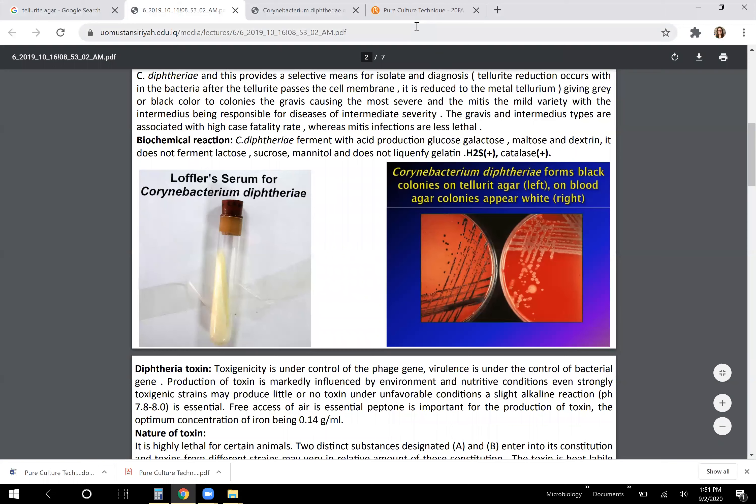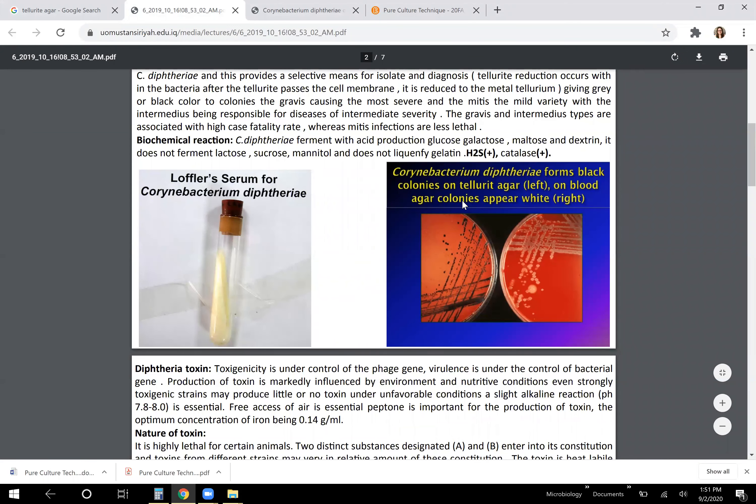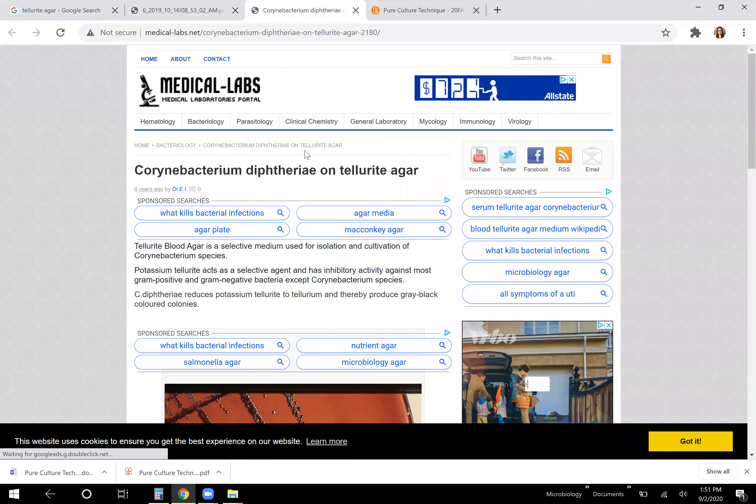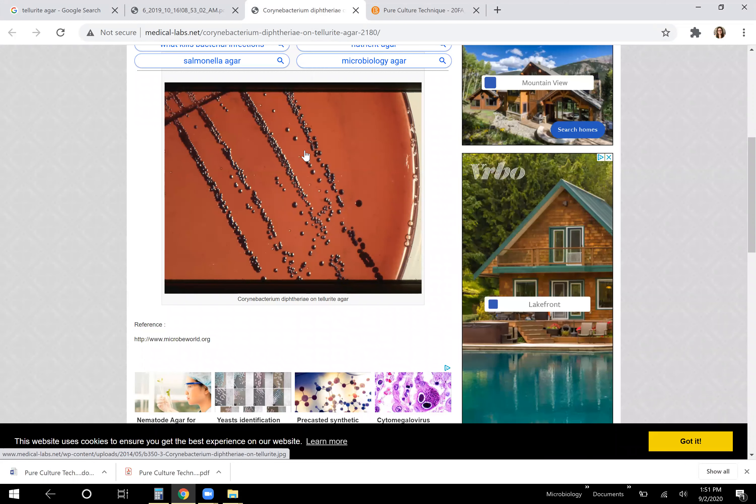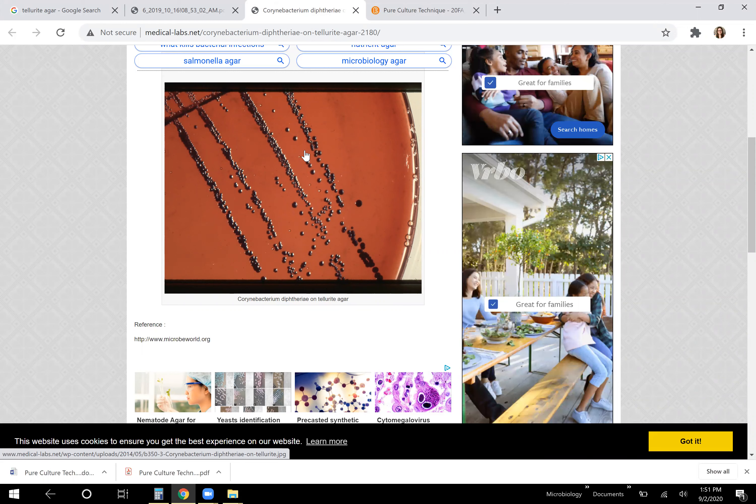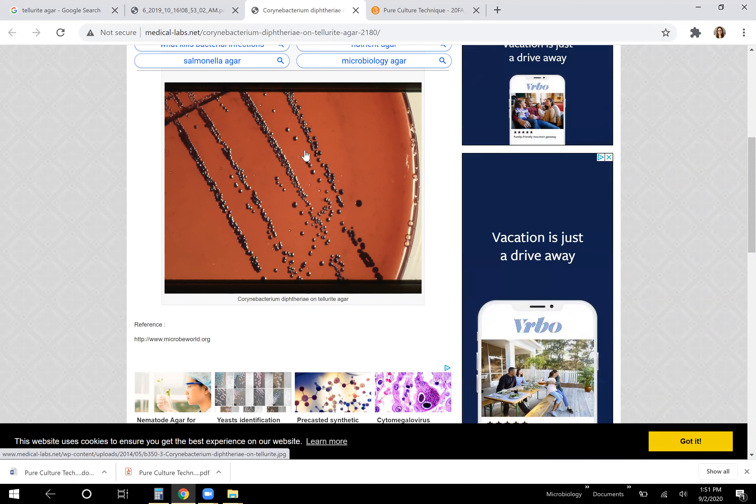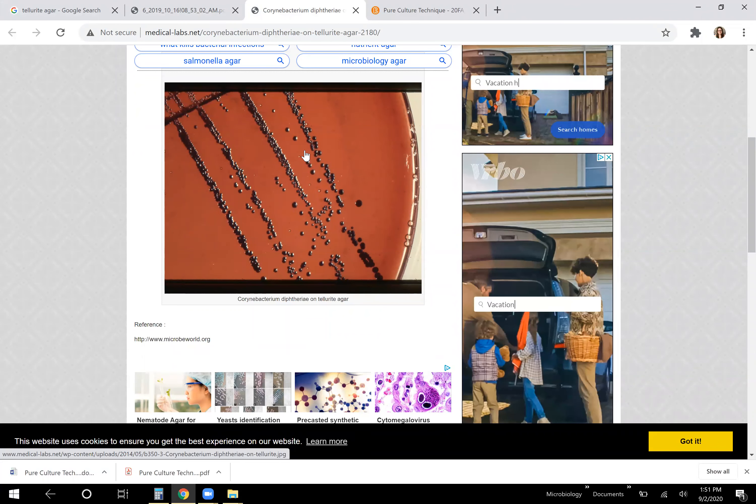They also mentioned the tellurite media as a differential media. So this here is a picture of what Corynebacterium looks like when it's growing on tellurite agar. Tellurite agar contains something extra in it called tellurite that when it's metabolized by the Corynebacterium genus, it will cause the colonies to take on a black color.